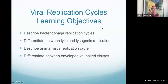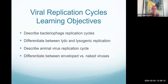We are going to be talking about the replication cycles of viruses, and we will be looking at both bacteriophage. Remember, bacteriophage are viruses that infect bacteria. We will start by describing the replication cycles of bacteriophage, and there are two different types of replication cycles that bacteriophage can do. They can do either what is called a lytic or a lysogenic replication cycle. After that, we will be looking at animal virus replication cycle and talking briefly about how they differ if it's an enveloped or a naked virus.